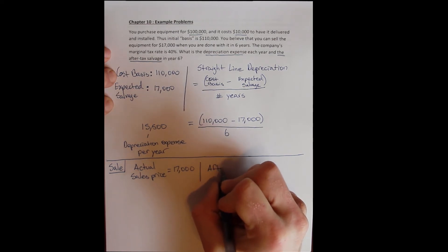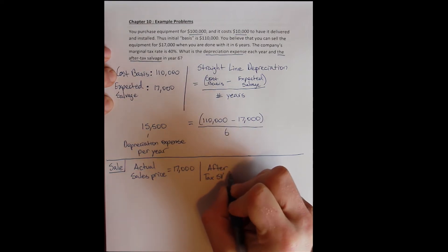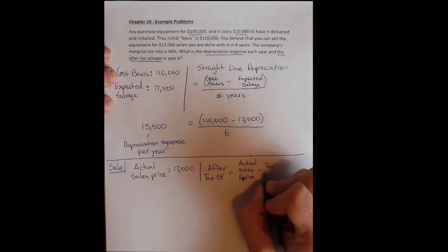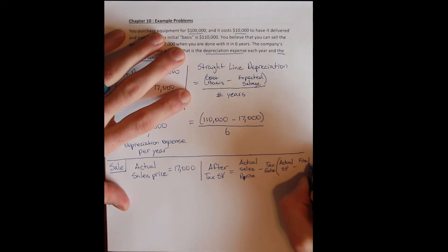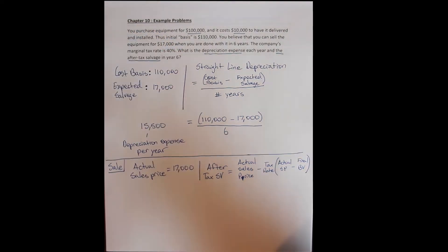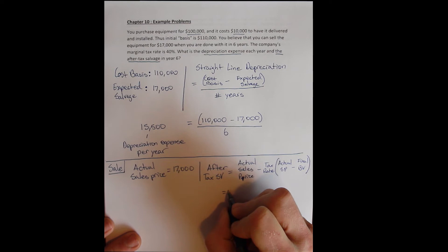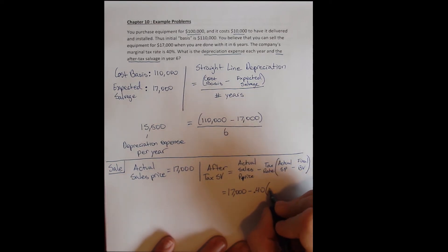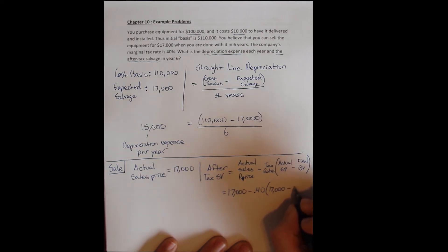So we've got our year six. We've got our after-tax salvage value. An after-tax salvage value is equal to the actual sales price or the actual salvage minus the tax rate that the firm has times the difference between the actual sales price and the final book value. So we can plug that in. We sell the asset, actual sales price, $17,000. The firm has a tax rate of 40% times the difference between the actual sales price, which is $17,000, and the final book value.